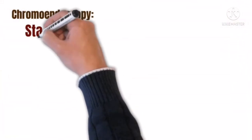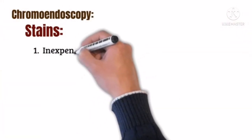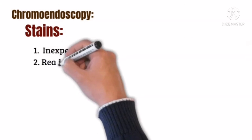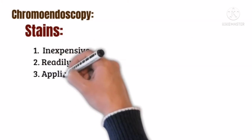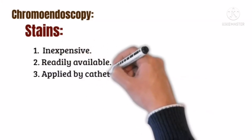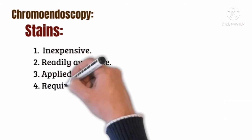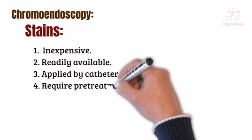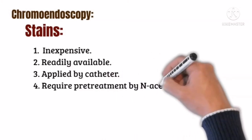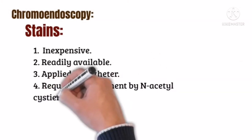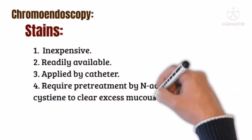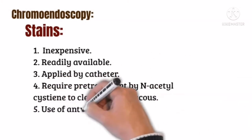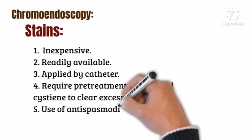Chromoendoscopy should be inexpensive and readily available, applied by catheter, and may require pre-treatment with N-acetylcysteine to clear excess mucus. An antispasmodic agent is used to reduce gastric motility.